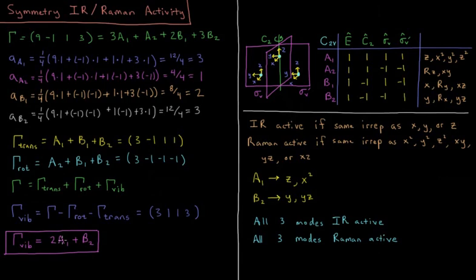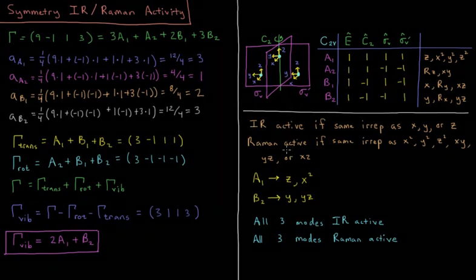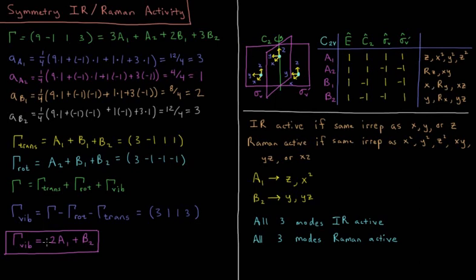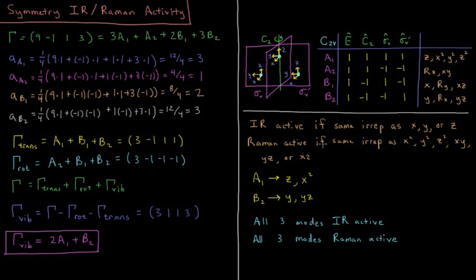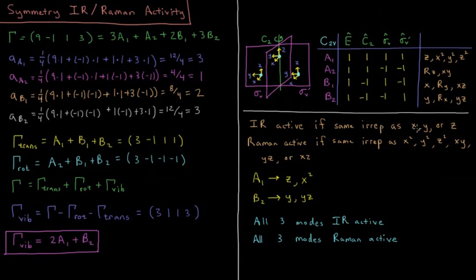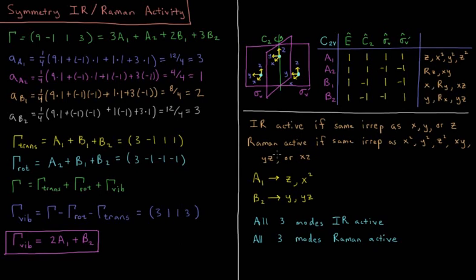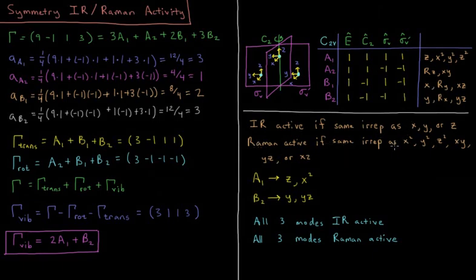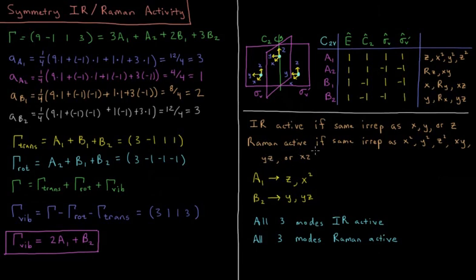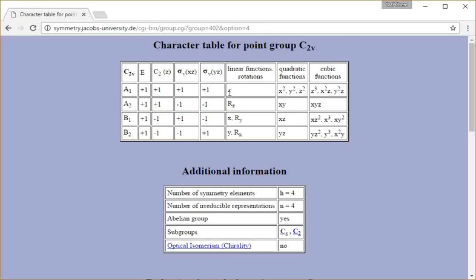So now, if we look over at our character table, we can determine the infrared activity and the Raman activity of those vibrational modes, whether or not they're going to show up on the spectrum of this molecule. So a vibrational mode is IR active if it has the same EREP as either X, Y, or Z in the character table. It's Raman active if it has the same EREP as a quadratic function: X squared, Y squared, Z squared, XY, YZ, or XZ. So linear functions X, Y, and Z for infrared activity, quadratic functions for Raman activity.